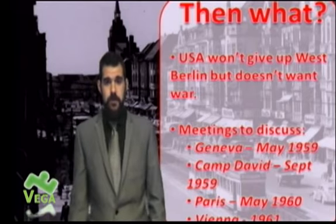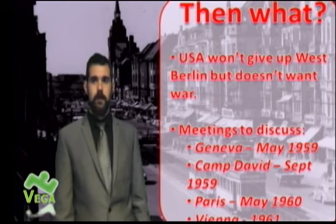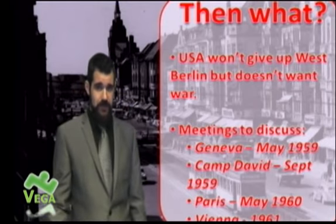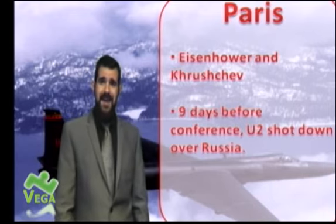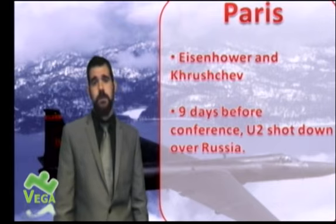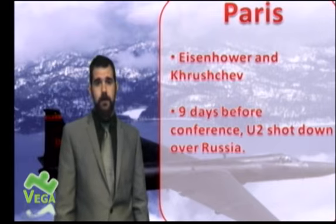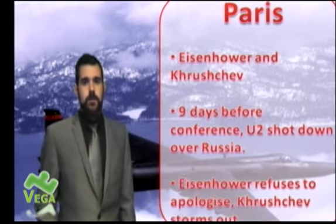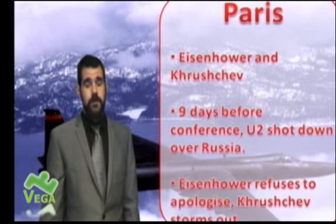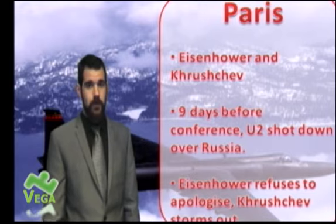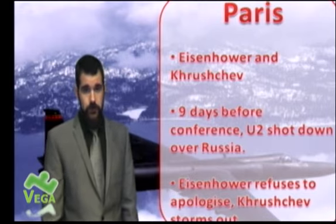Paris is one of the big summits. Eisenhower goes there hoping for something called 'open skies,' which means agreeing to allow spy planes to fly over each other's territory to verify no one is preparing for war. The Russians hadn't agreed to this. Nine days before the conference, Eisenhower sent a U-2 spy plane over Russia and it got shot down, piloted by Gary Powers — a lovely detail for extra marks. This makes Khrushchev furious. He demands an apology; Eisenhower refuses, and Khrushchev throws his toys out of the pram and goes home.